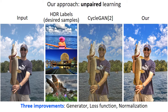Our approach uses unpaired learning. We collected an HDR dataset as the desired samples. Similar to CycleGAN, our method is based on a two-way GAN but with three improvements. Our result is significantly better than CycleGAN. The three improvements focus on the generator, loss function, and normalization.